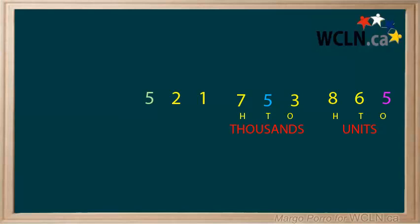When the units period is full and you pass 999, you move to the thousands period. The pattern of ones, tens, and hundreds continues, with one thousands, ten thousands, and hundred thousands.